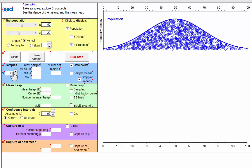I'm going to take some samples of size 15, so I set N as 15 over here, and take a sample. And there is that first sample.